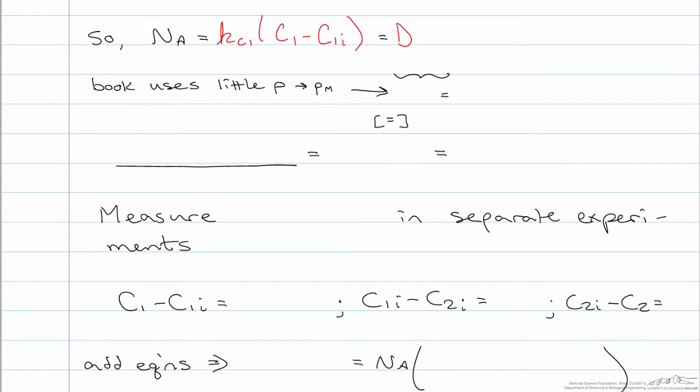That's equal to the diffusivity times the equilibrium constant divided by the thickness times the concentration at the interface. Now this is in the fluid, the dissolved phase concentration was K prime times C1i, so that has been substituted in here, so minus C2i.